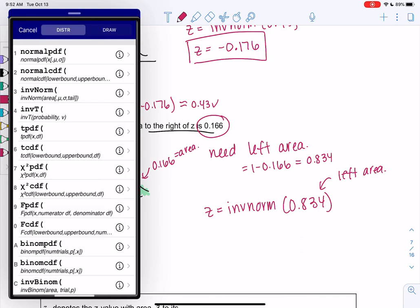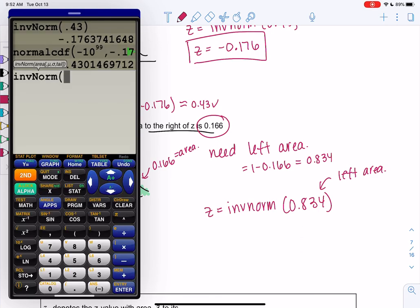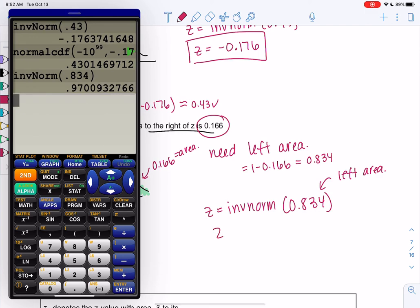So we'll do inverse norm, which is the third one down, 0.834, and we get about a z-score of 0.970. I like three decimal places for a z-score.